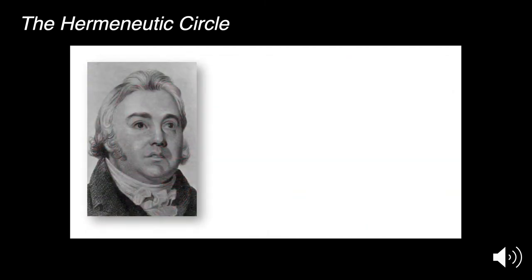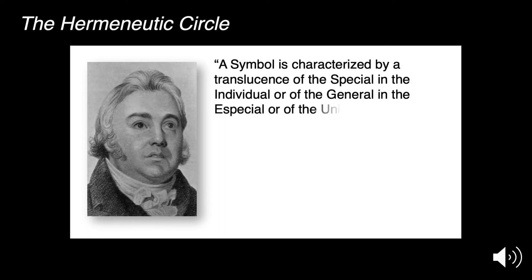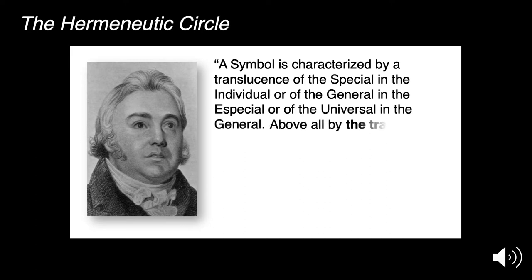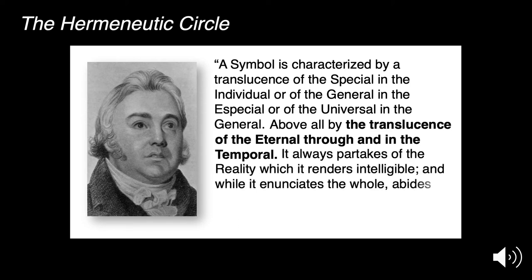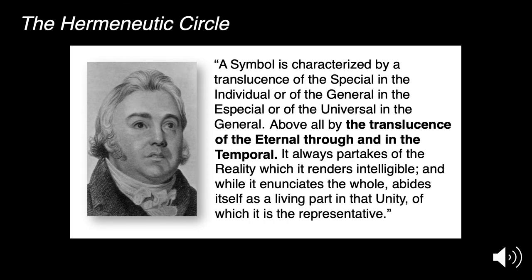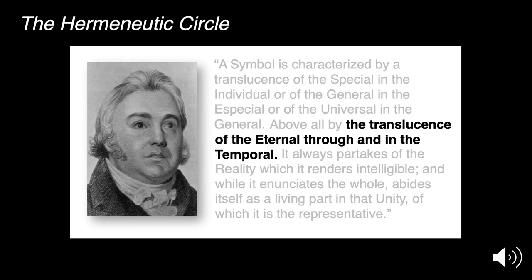Here's what Samuel Taylor Coleridge had to say about symbols: 'A symbol is characterized by a translucence of the special in the individual, or of the general in the especial, or of the universal in the general. Above all, by the translucence of the eternal through and in the temporal. It always partakes of the reality which it renders intelligible, and while it enunciates the whole, abides itself as a living part in that unity of which it is the representative.' This idea of the translucence of the temporal through and in the temporal is really the essence of what a symbol is — the particular by which the universal can be apprehended. The symbol is a kind of doorway into a larger world.